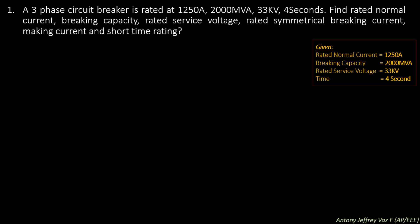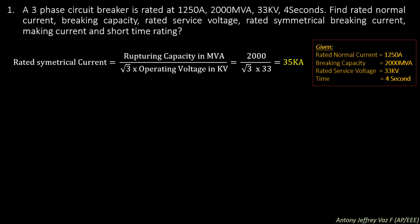The given values are: rated normal current is equal to 1250 A, braking capacity equal to 2000 MVA, rated service voltage is 33 kV, and the time for braking is 4 seconds. So first we need to find the rated symmetrical current.